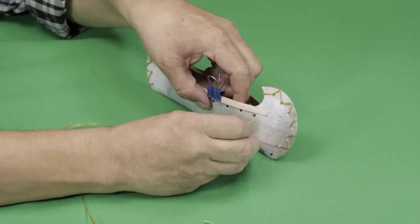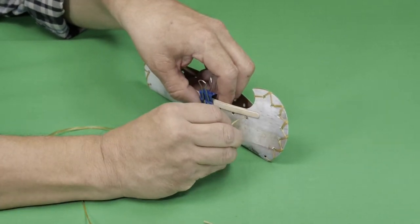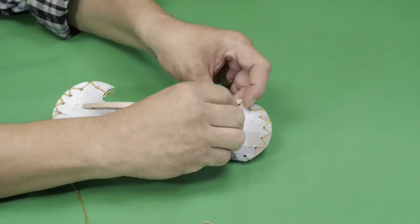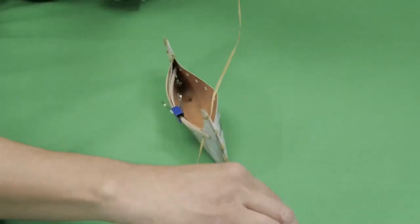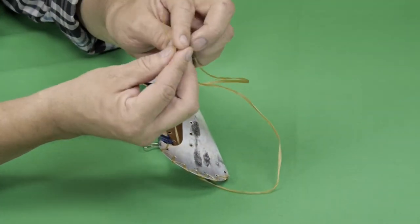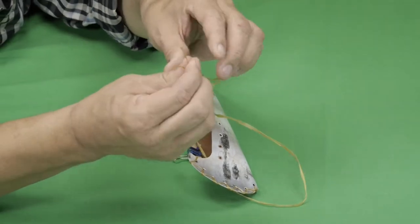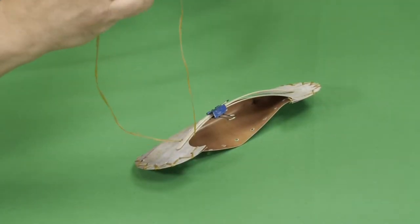Using the sinew again, lace through the end hole of the side rim and pull through till you match the length of your sinew together. Then tie one knot.